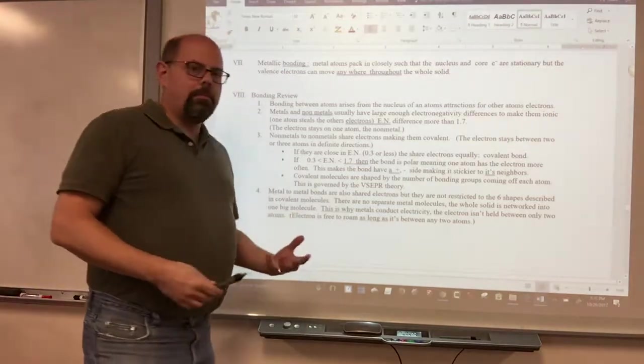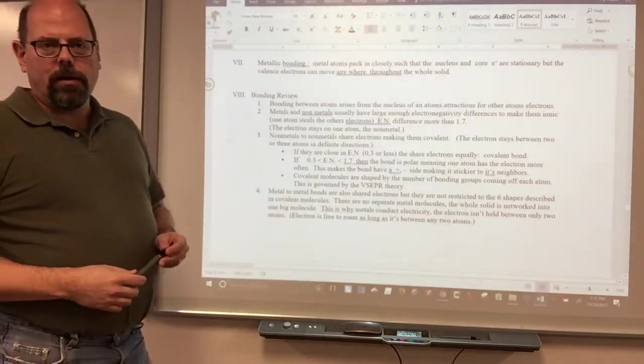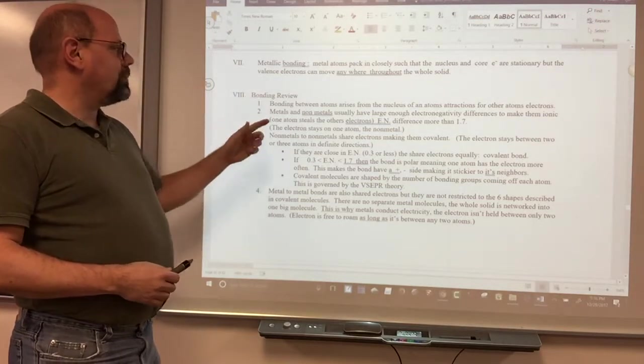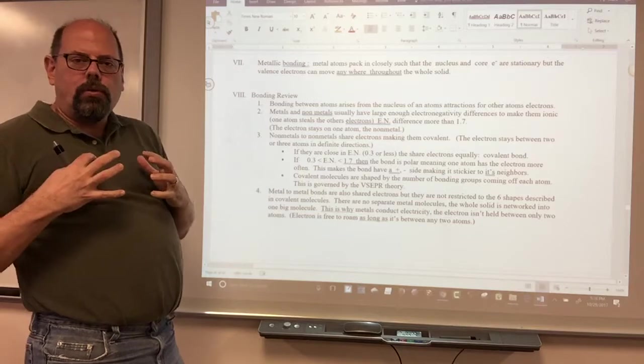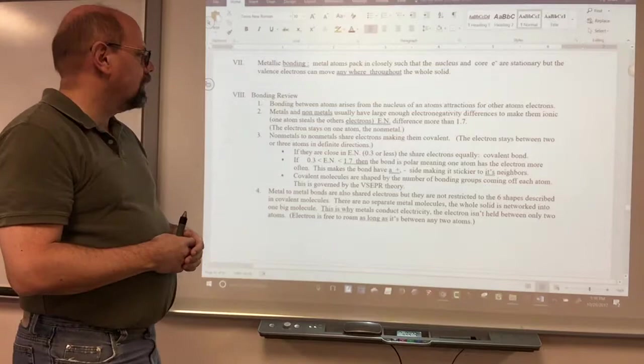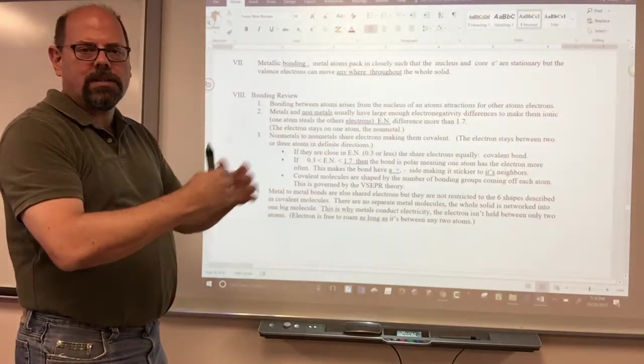Okay, so the review on bonding, the way that things bond. One, bonding between atoms arises because that atom's own nucleus is attracted to other atoms and wants to fill up its outer shell. It has an attraction for neighboring atoms' electrons.